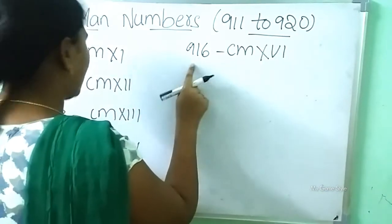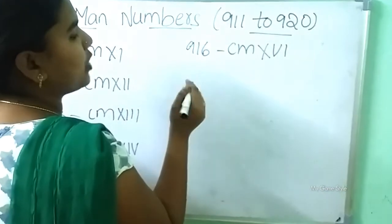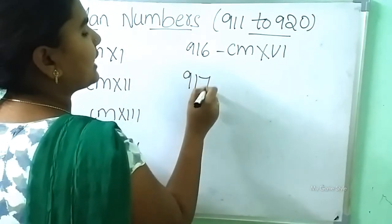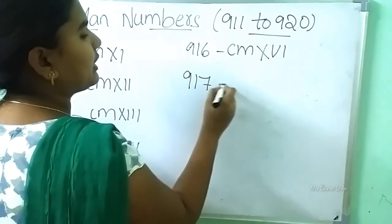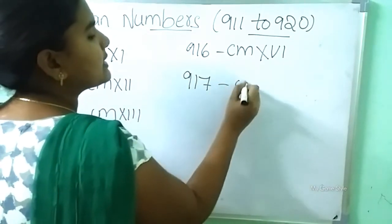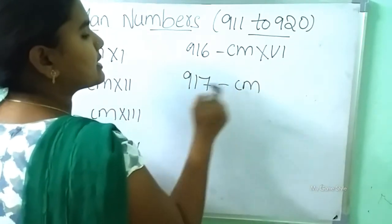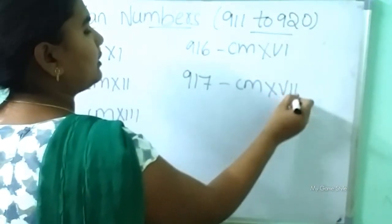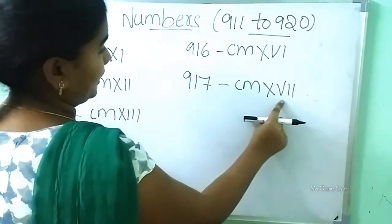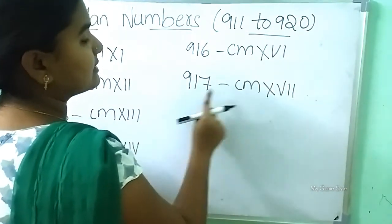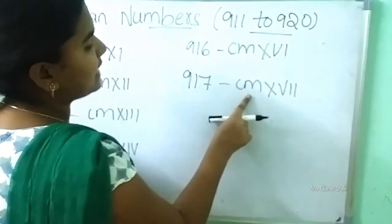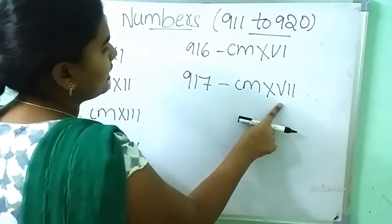After 916, what number will come? 917. Now CM is 900. XVII is 17. So this means 917, written as CMXVII.